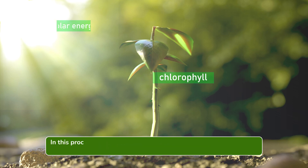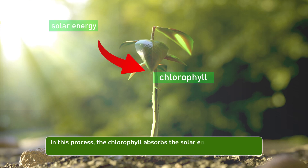In this process, the chlorophyll absorbs the solar energy and converts carbon dioxide and water into glucose and oxygen.